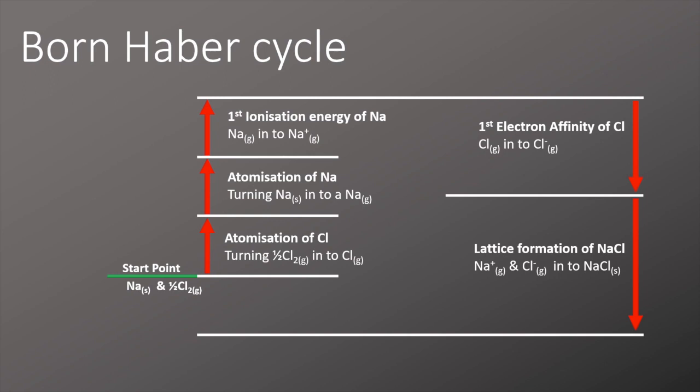Now to complete the whole Born-Haber cycle, there's the enthalpy of formation for sodium chloride, which we're going to just put up on the left-hand side here. That's where we're just going to take the atoms of sodium and chlorine and combine them together in a formation reaction to make sodium chloride.